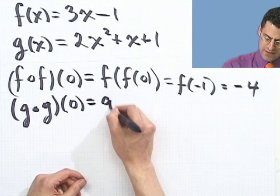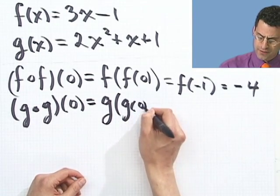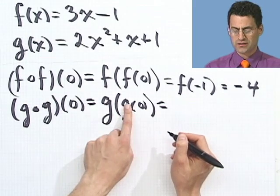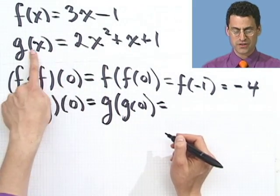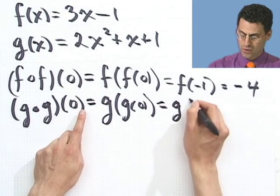Well, let's see. For me, this means g of g of 0. So first I find g of 0 by putting in 0 for x in the g function, 0 and 0, 1. So I see 1.